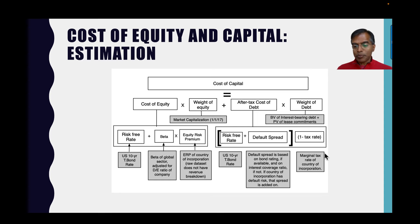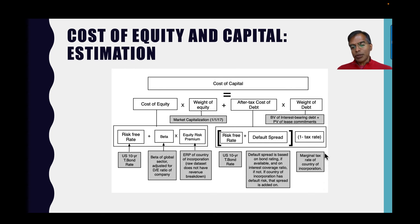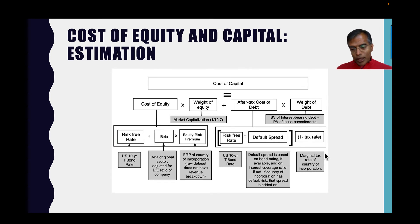For the weights, I use market cap for equity. For debt, I use the book value of interest-bearing debt because much of the debt I only have book value for — converting to market value probably isn't worth the trouble. To that, I add the present value of lease commitments. Increasingly, under IFRS or GAAP, lease commitments are already shown as debt, so I use that; if not, I compute the present value. The weights of equity and debt add up to 100%, and the weighted average gives you the cost of capital.